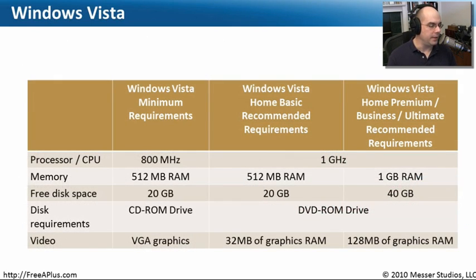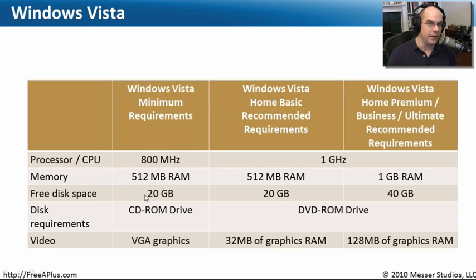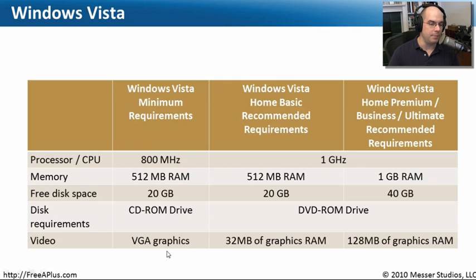The minimum requirements for Windows Vista are listed here, broken down by processor, memory, disk space, other disk requirements, and video. Windows Vista at the very minimum needs an 800 megahertz machine with half a gigabyte of RAM, 20 gigabytes free on the hard drive, a CD-ROM drive, and at least basic VGA graphics capabilities.